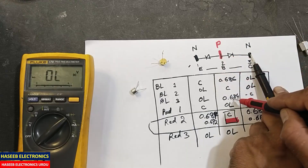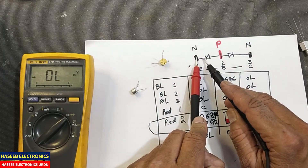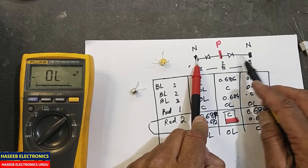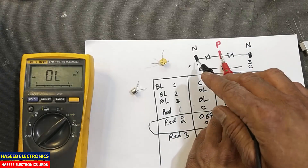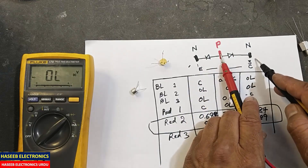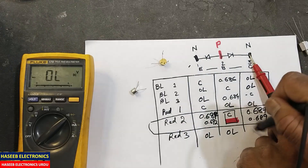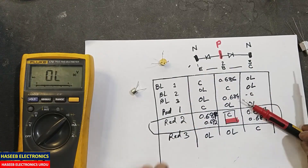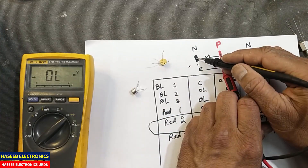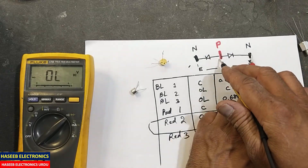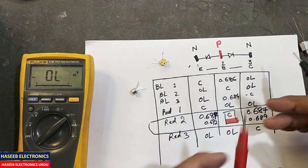Moving red lead to pin one and two — cathode-anode in reverse bias, reverse bias, two diodes back to back. When red lead is at pin two, this junction and this junction are both forward biased. If any diode shows continuity on both sides, that diode junction is damaged — as demonstrated with the bad transistor.